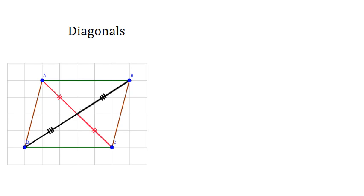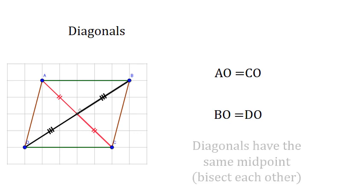We say in this case that both diagonals bisect each other or diagonals have the same midpoint. So AO equals CO, BO equals DO. We say diagonals have the same midpoint or bisect each other.